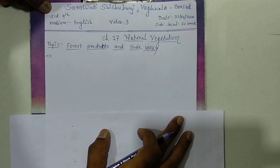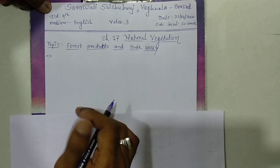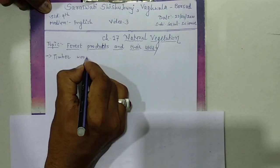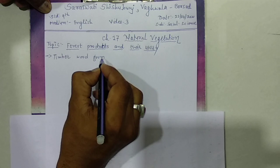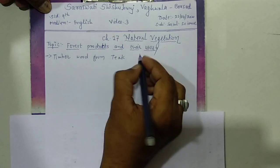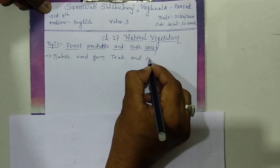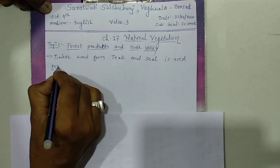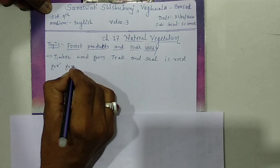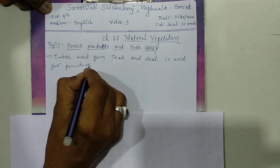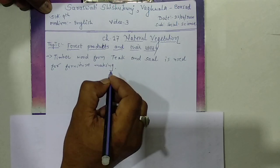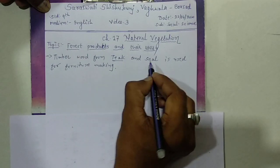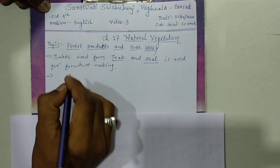I will mention only the main topics and main characteristics. The first one is timber wood. Wood from teak and sal trees is used for furniture making. So teak and sal wood is primarily used for making furniture.